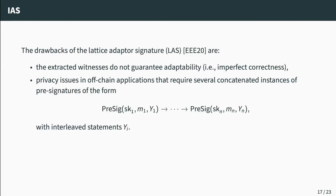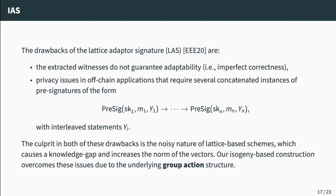The drawbacks of the lattice-based adapter signature of Esgin et al. were twofold: extracted witnesses do not guarantee adaptability, giving imperfect correctness, and it hinders the privacy of off-chain applications requiring concatenated pre-signatures with interleaved conditions. The main culprit in both drawbacks is the noisy nature of lattice-based schemes, which causes a knowledge gap and increases vector norms in applications. Our isogeny-based adapter signature overcomes these issues due to the underlying group action structure — achieving perfect correctness without harming the privacy of off-chain applications.